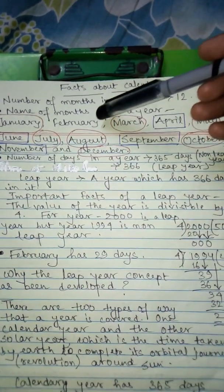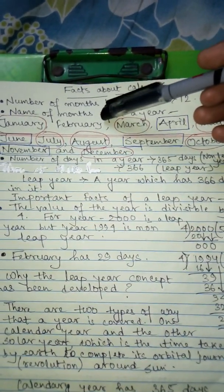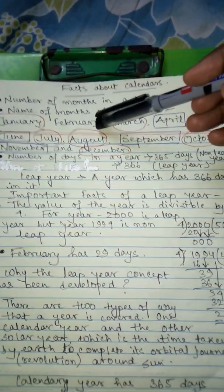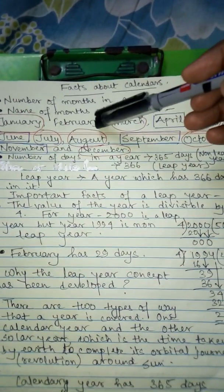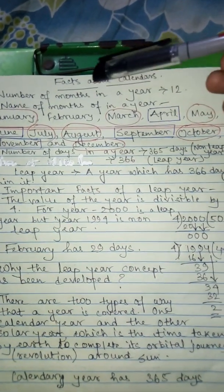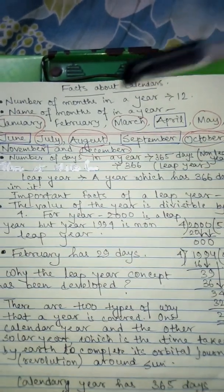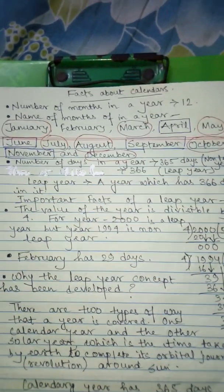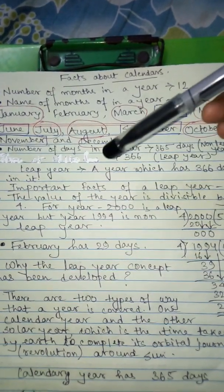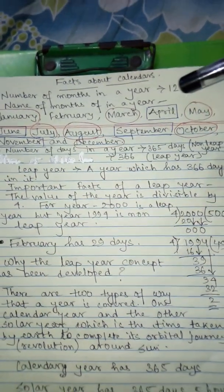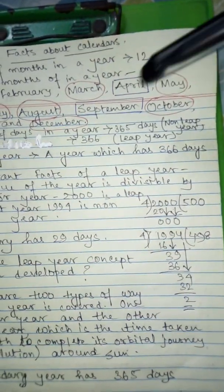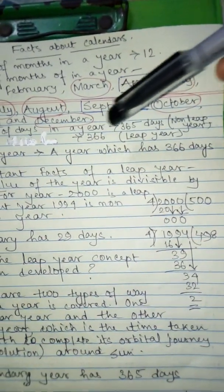February has neither 31 nor 30 days. It has 28 days in a non-leap year, as we discussed in the previous two videos, and 29 days in a leap year. The number of days in a year is 365 for a non-leap year and 366 for a leap year.